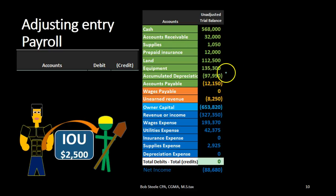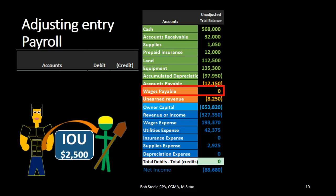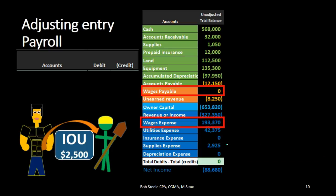Looking through the trial balance, we find an account called wages payable — that's going to be the first account and will probably be part of our adjusting process. Then below the blue line, looking through revenue and expenses for something related to wages or payroll, we find wages expense. So we can already say wages expense is going to be affected, and wages payable will be affected.